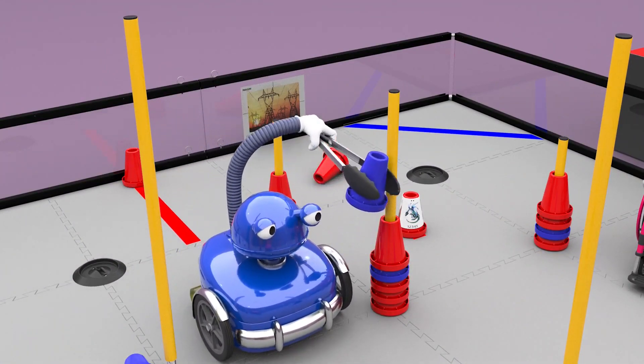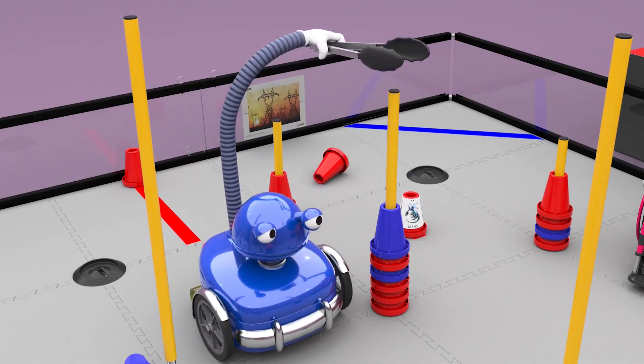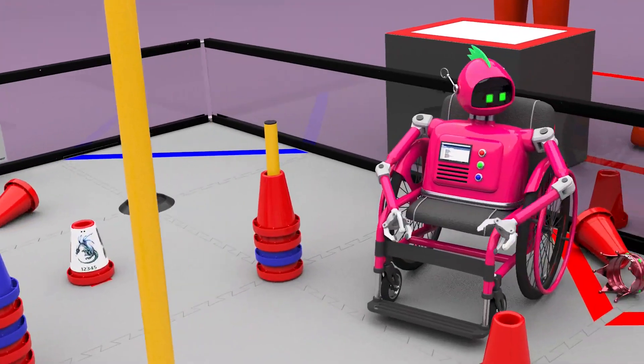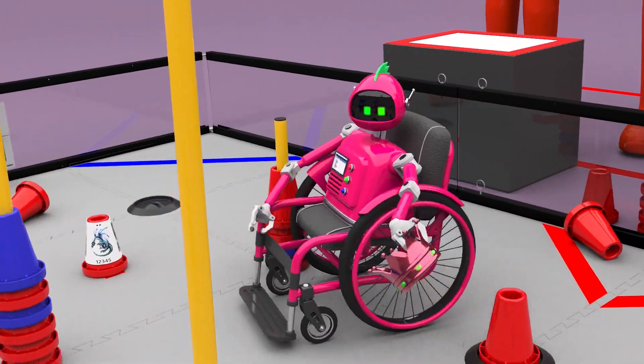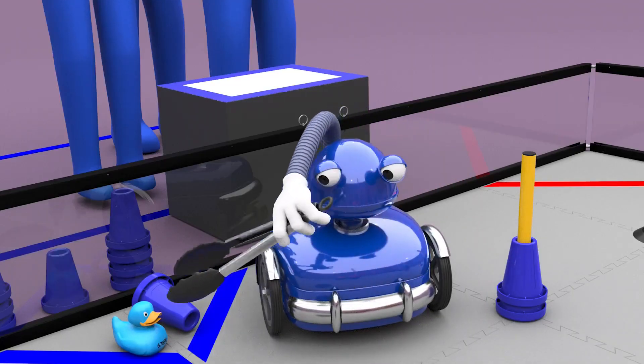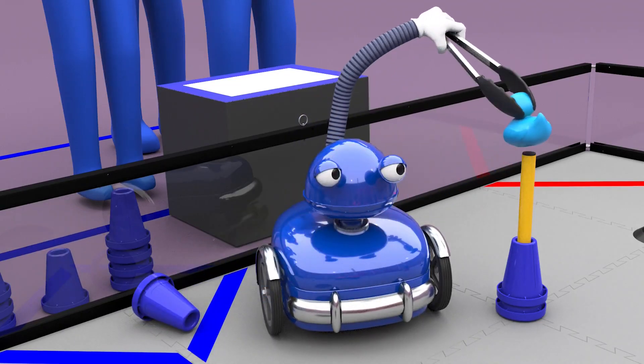An alliance owns the junction if their colored cone is scored on top. This earns an additional three points. The junction can also be owned by capping it with a beacon. This earns 10 additional points and prevents the opposing alliance from recapturing that junction.